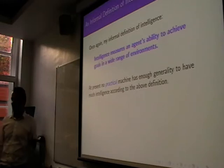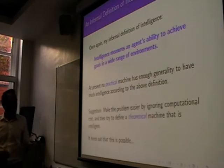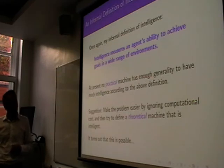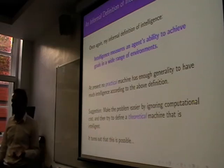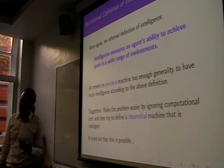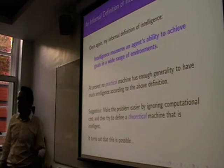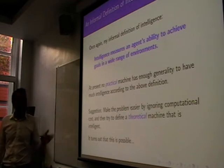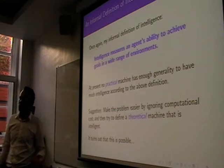One possibility is to theoretically study the problem and say we're going to ignore computational cost and try to come up with a theoretical machine which is intelligent. A lot of people object to this, saying if you're ignoring computational cost you're throwing out the essence of the problem. I accept that computational cost is obviously very important, but nevertheless, prior to this work by Hutter, nobody had ever actually managed to even define such a system ignoring computational cost.